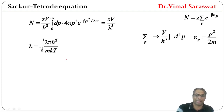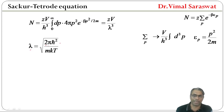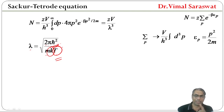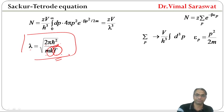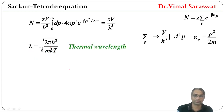So N = Z · (V / h³) · ∫₀^∞ 4πp² · e^(-βp²/2m) dp, which equals Z · V / λ³, where λ is the thermal wavelength given by λ = √(2πħ² / mkT), with k being Boltzmann's constant, T temperature, and ħ the reduced Planck's constant.